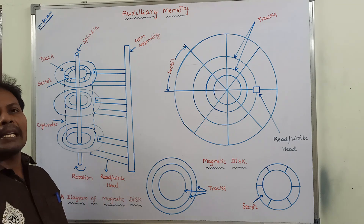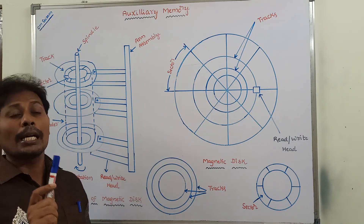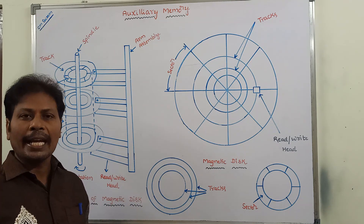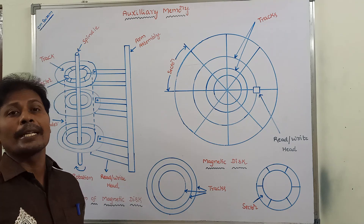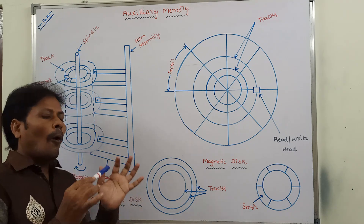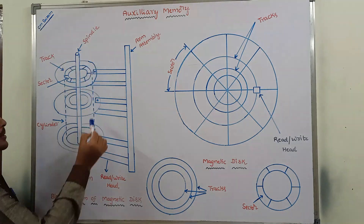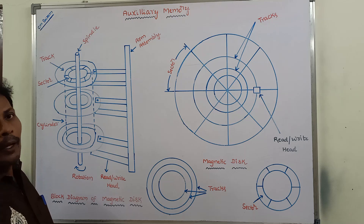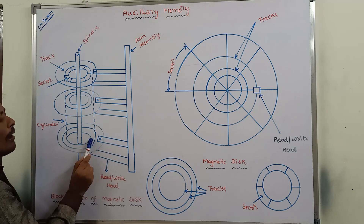A magnetic disc is a circular plate constructed with metal or plastic coated with magnetized material. Often, both sides of the disc surface can be used to store information. All the discs are stacked on one spindle, with a read-write head available on each surface of the disc.